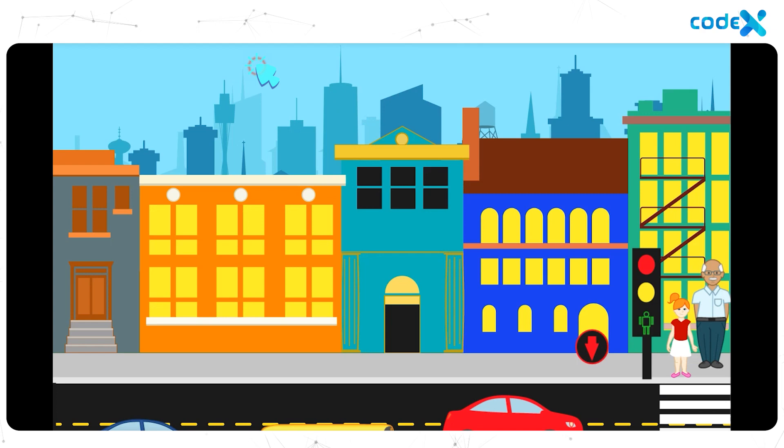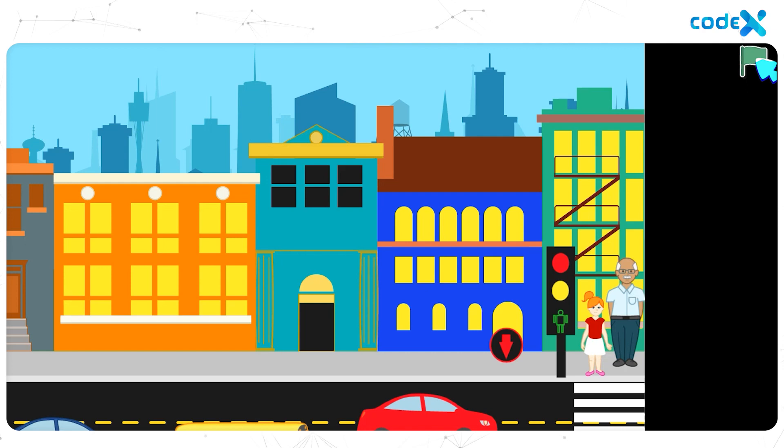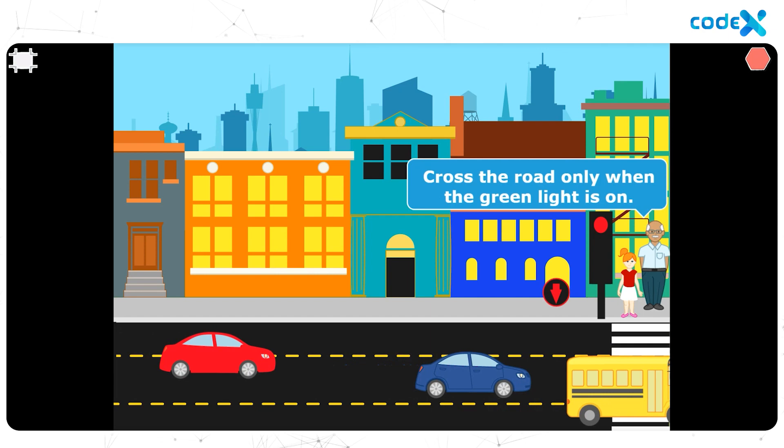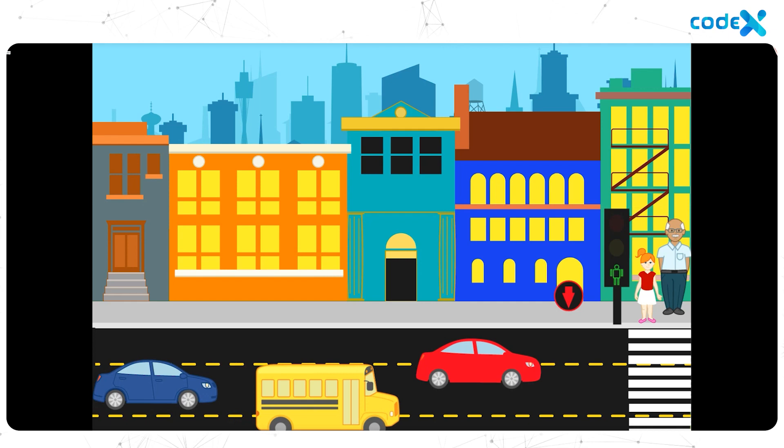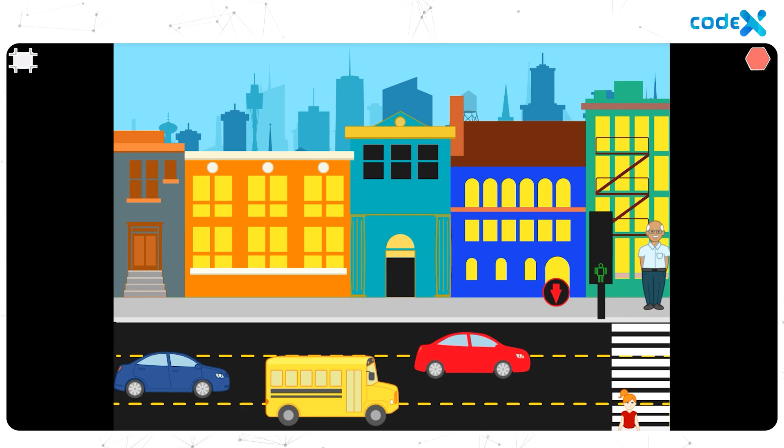Click on the full screen icon on top of the stage, then click on the green flag icon on the top right corner. The vehicles are moving in the city background since the red light in the pedestrian signal is on. Lily's grandpa is giving her instructions on how to cross the road. The green light is on — let's click on the Move button and help Lily cross the road. She has crossed the road!